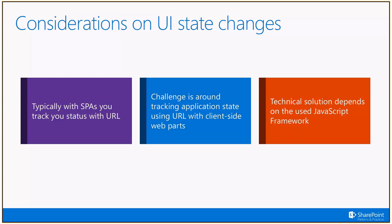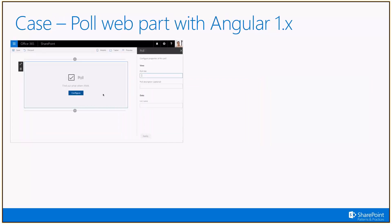This is exactly the challenge: how do you track the state of what your web part shows without colliding with other elements on a page? The key scenario is: if you have multiple instances of the same web part on the page, how do you maintain state for all of those individual instances? That means you cannot use the URL — that's not an option. We use a classic poll scenario as our example today, which has three different statuses when presenting its UI.